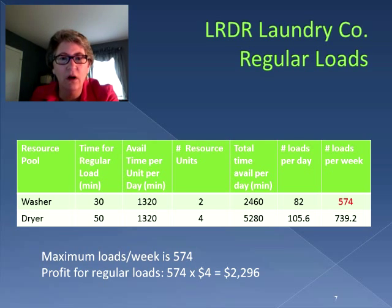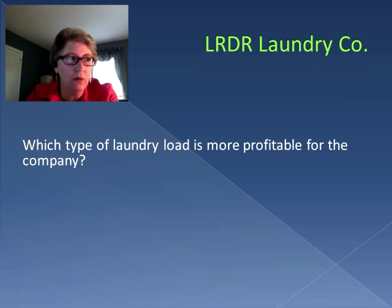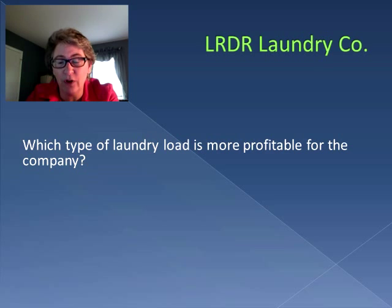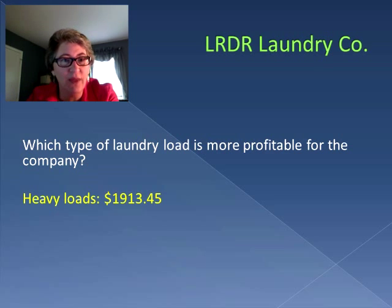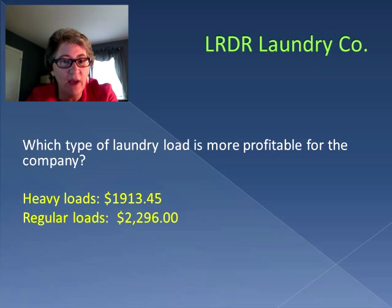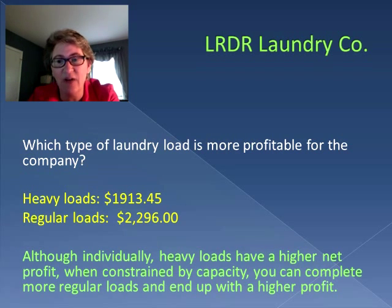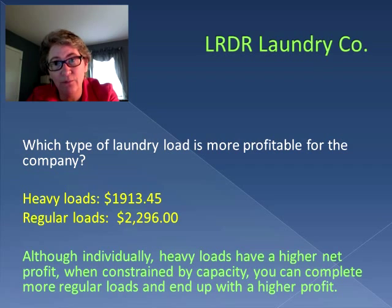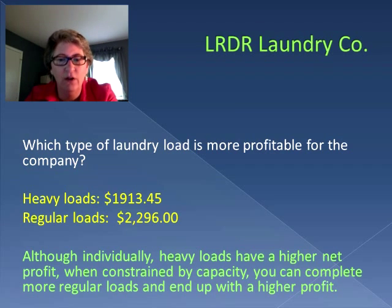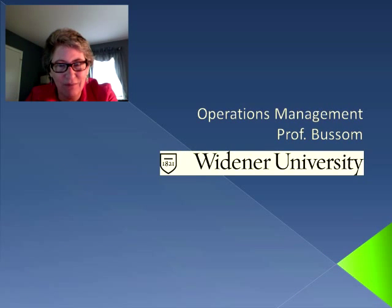So even though heavy loads give more profit per load, in terms of which type is more profitable for the company, heavy loads only gave us $1,913.45, whereas regular loads gave us $2,296. Although individually heavy loads have a higher net profit, when constrained by our capacity, we can complete more regular loads and end up with a higher total profit. When looking at profitability, we must consider the constraint of capacity. Next time, we're going to start talking about inventory.